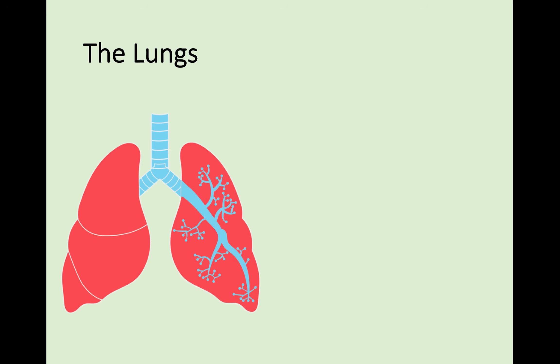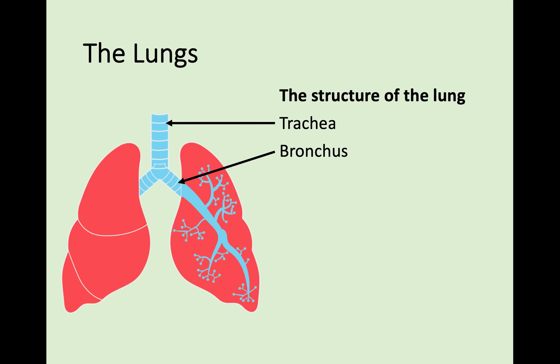First of all, we're going to be looking briefly at the lungs. You'll probably have seen a structure like this before. We're going to concentrate on the main components of it. First of all, you have a trachea that comes down, then it splits into a bronchus, and the bronchus itself then splits up into different bronchioles. These little bits are starting to look like trees that come off.